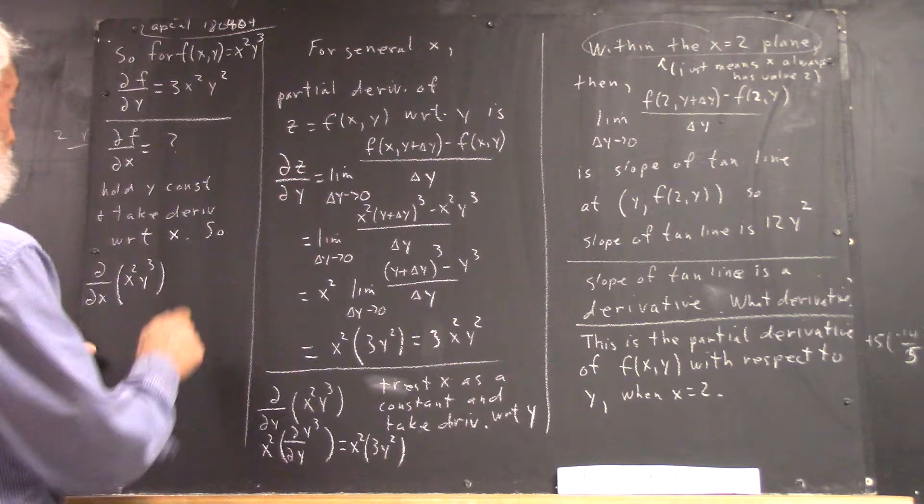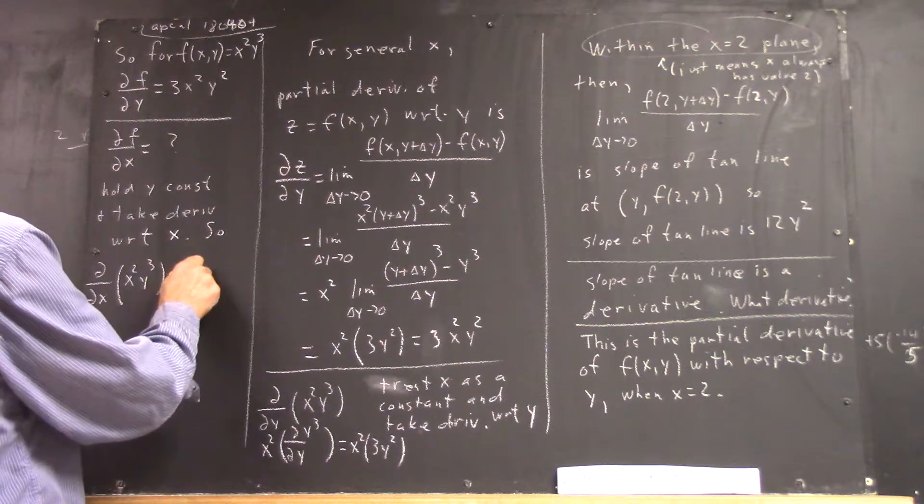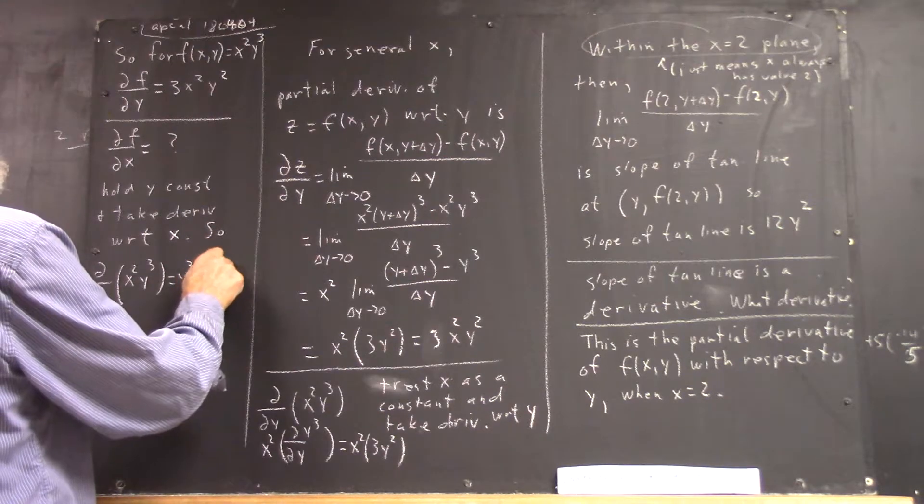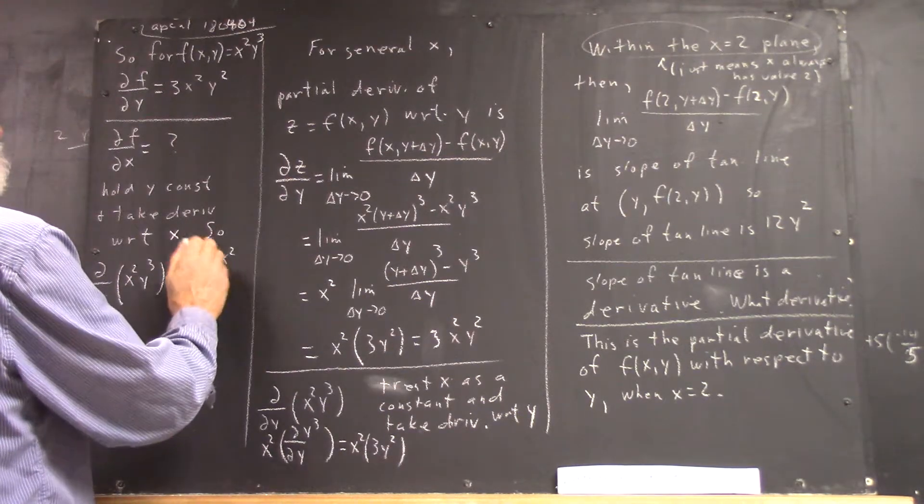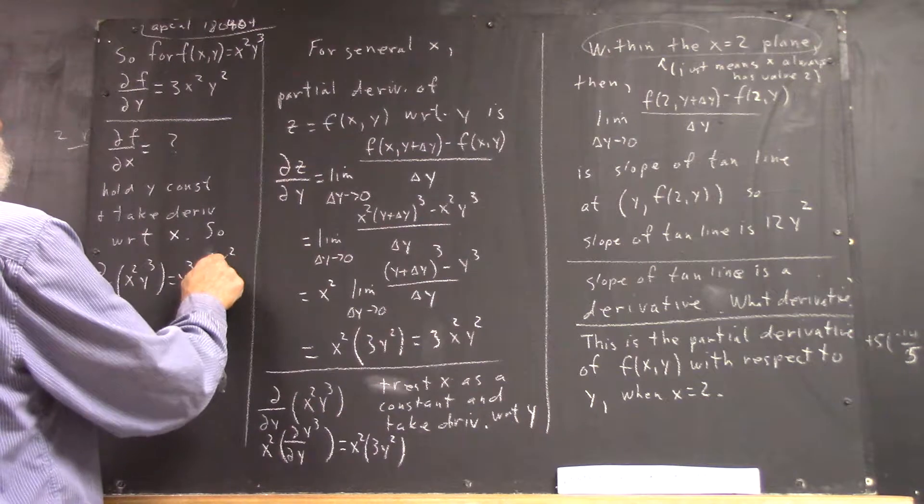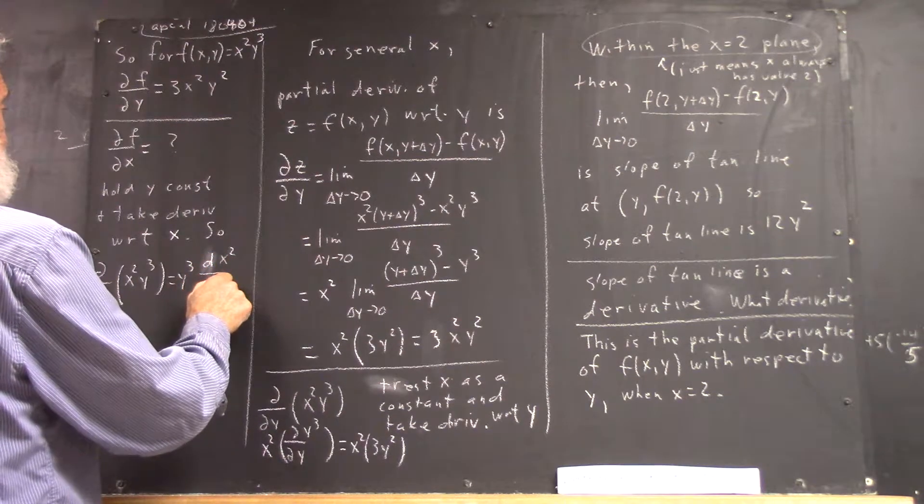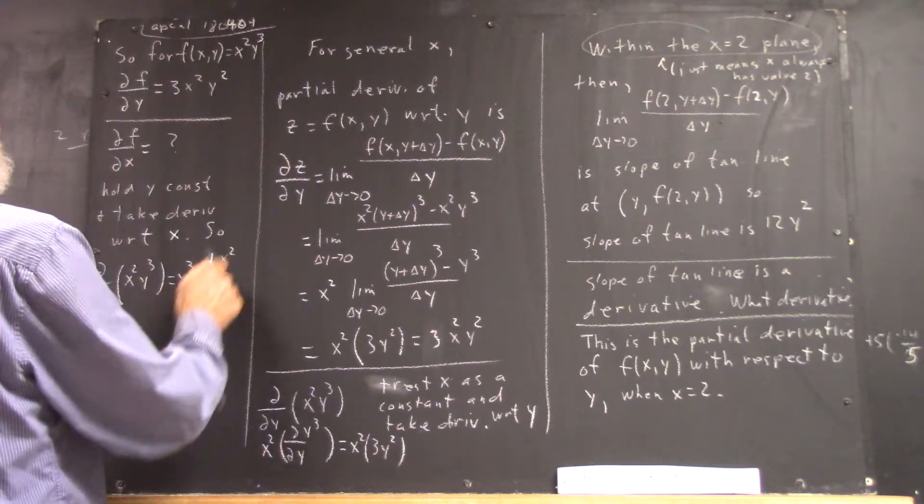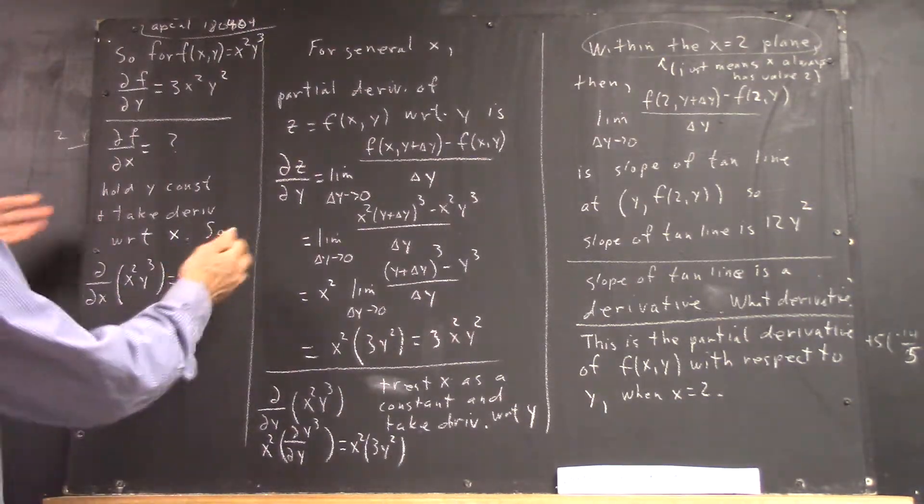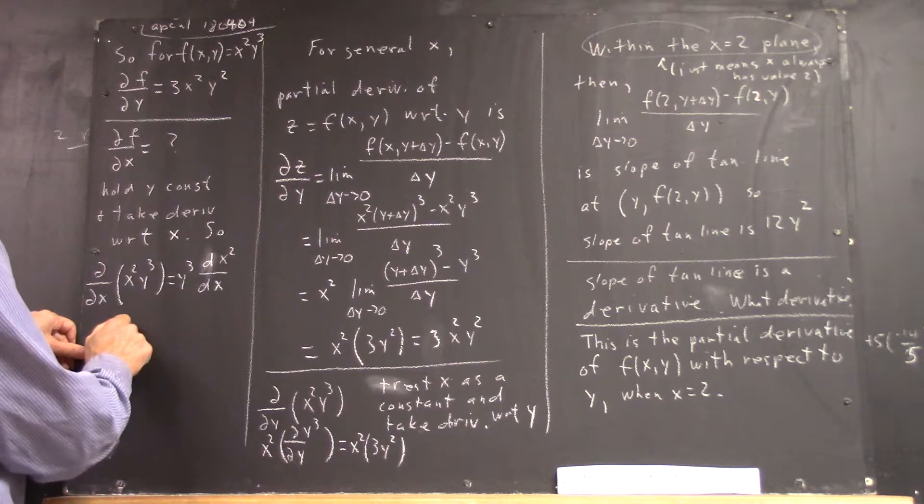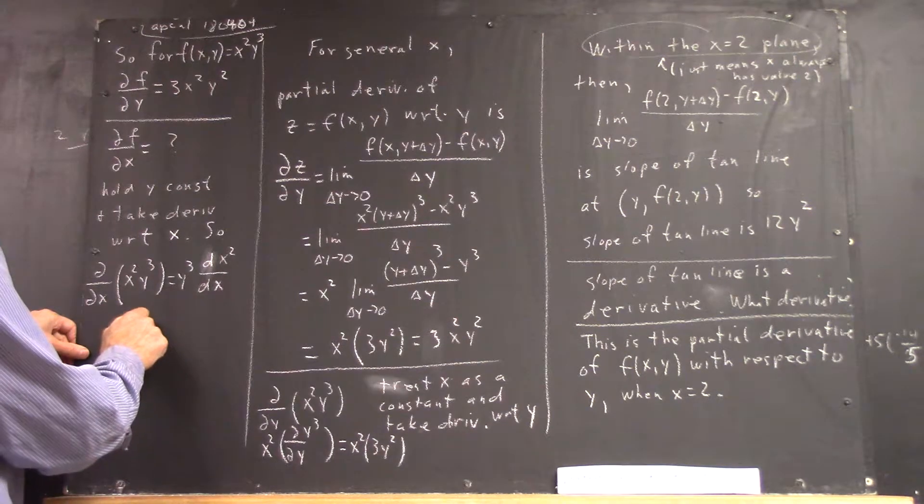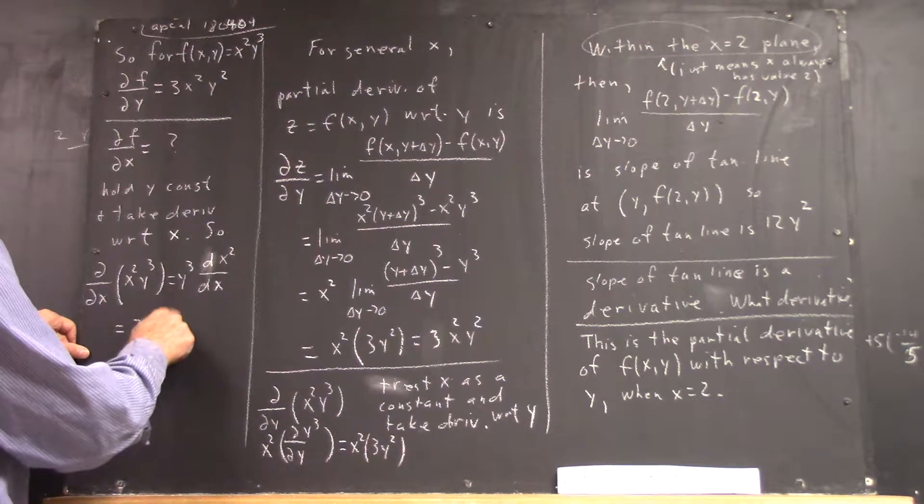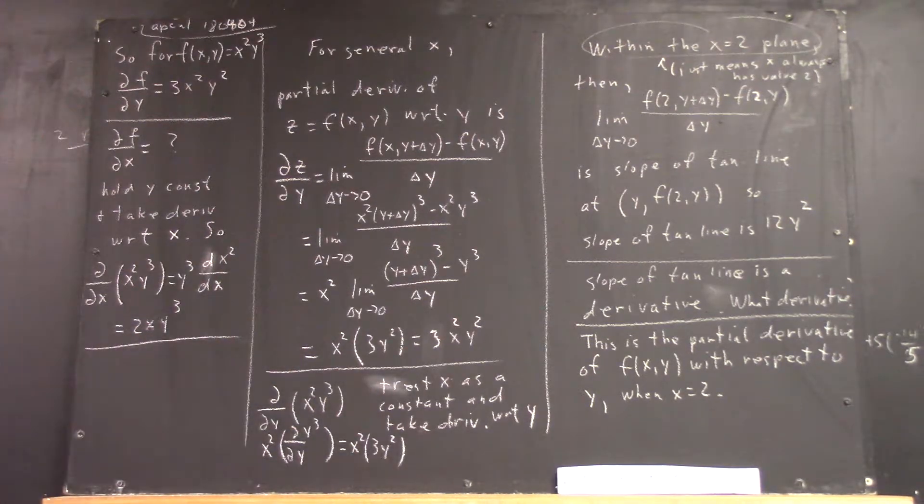We're holding y constant. And actually, I should have written, yes. Derivative of x squared with respect to x, and that's just going to be 2x y cubed. Okay?